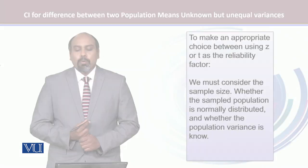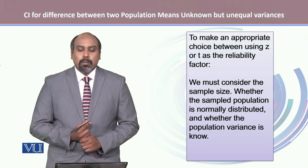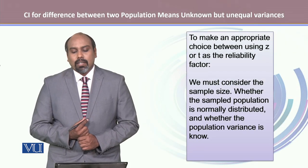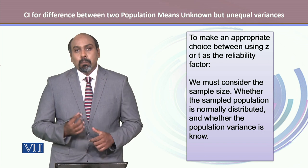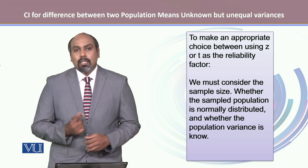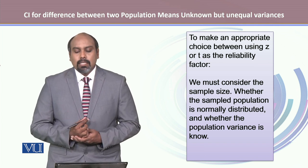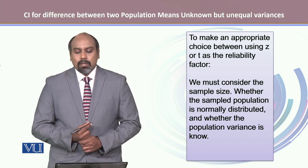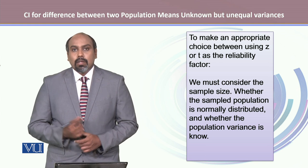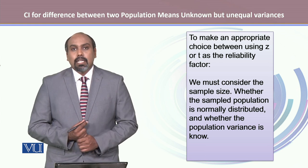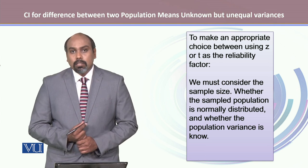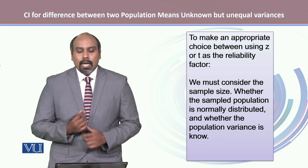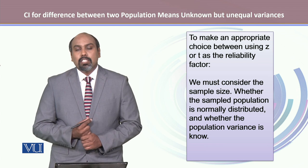To make an appropriate choice between using Z or T as a reliability factor, we must consider sample size, whether the population follows a normal distribution, and whether the population variance is known. This will be discussed in the next module.